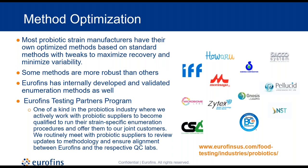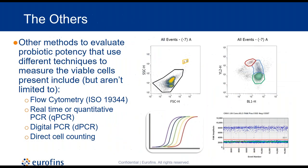Alternative and emerging technologies for probiotic potency verification that measure viable cells include: digital droplet PCR, as Anthony described; flow cytometry, using dual nucleic acid viability stains to measure viable cells; quantitative PCR, similar to digital PCR but requiring a standard curve; and direct cell counting under a microscope, though that can be fairly tedious and laborious — and hard on the eyes.